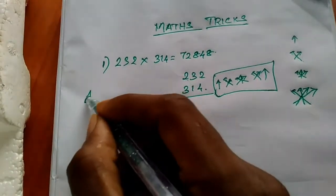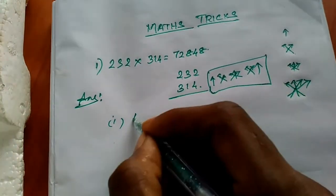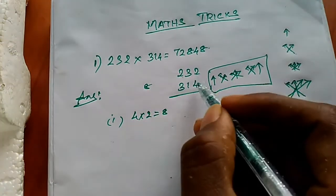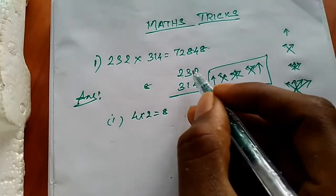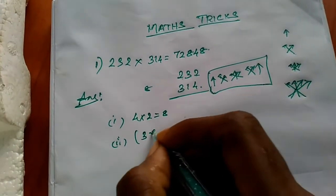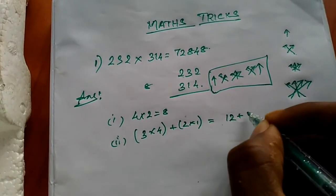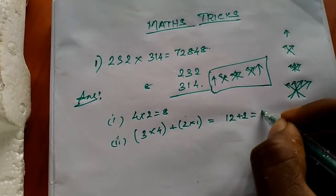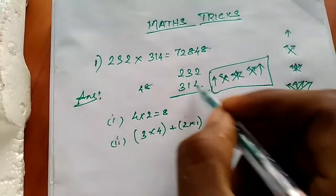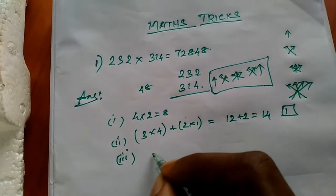Step one: 4 twos are equal to 8, no carry. Next, 3 into 4 plus 2 into 1 equals 12 plus 2 ones, which equals 14. Write 4, carry 1.